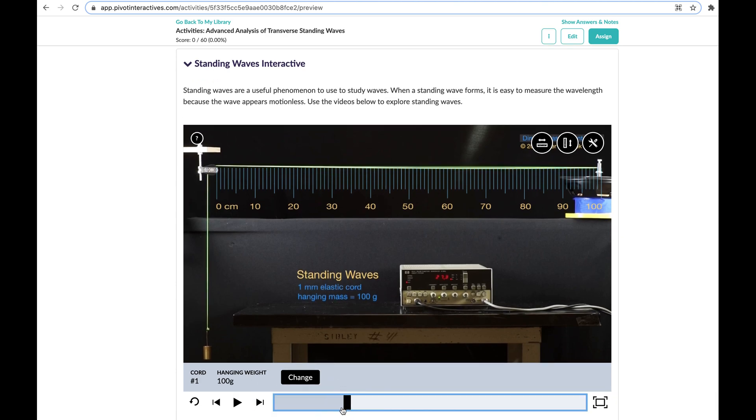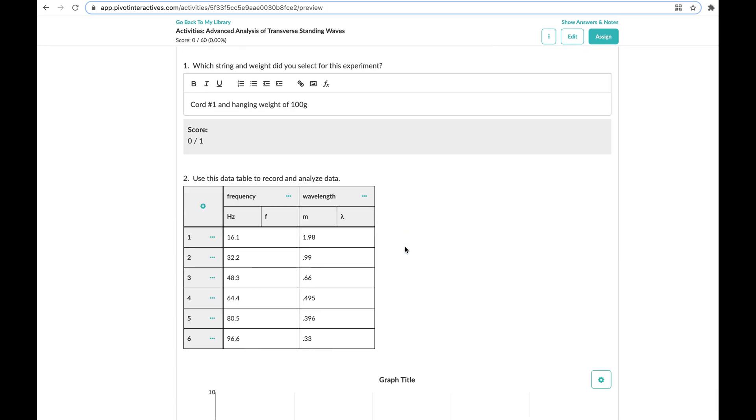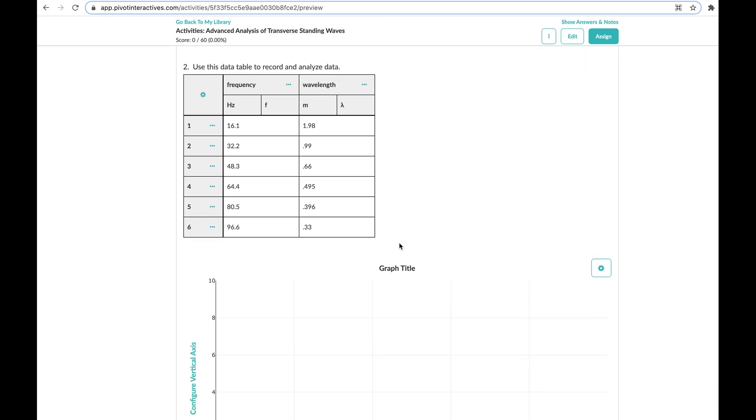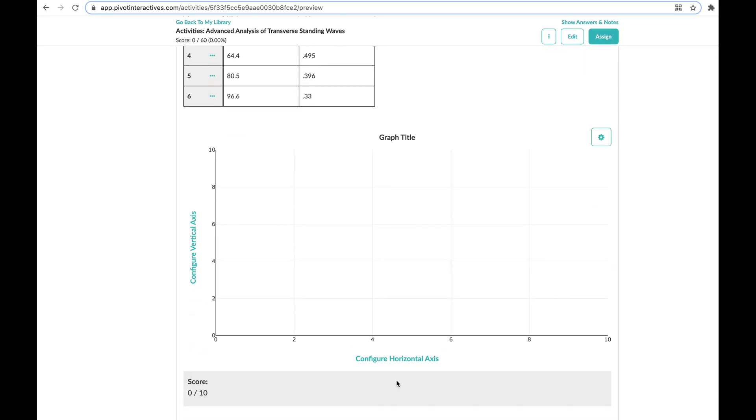Then if I go up to about 32.2, we see here that we have two antinodes. This is a full complete wave. So that's around 99 centimeters or 0.99 meters. And I'm going to keep mine in meters because it's going to keep the math easier for us. So I went ahead and already did the measurements and put them in the table here. But you should do your own measurements.